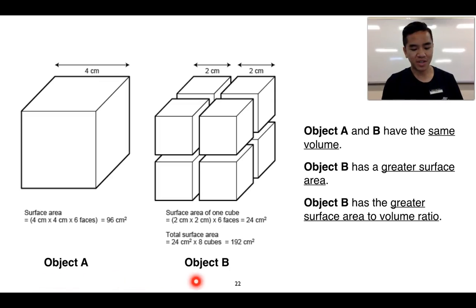What we've got are two objects here. And what we know is that both objects, object A is just one cube, and object B is made up of eight smaller sized cubes. But when we put them together, object B would actually take up the same amount of space as object A. That means that object A and object B have the same volume.